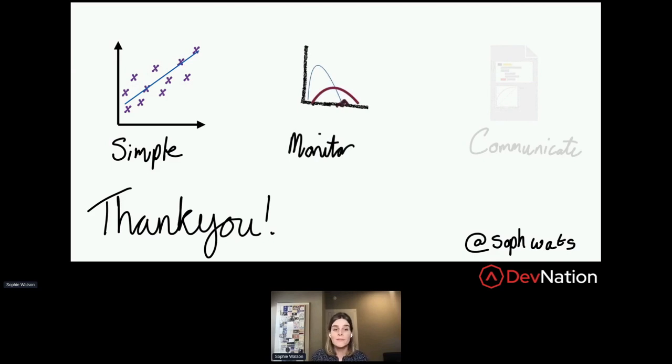Secondly, we need to monitor our data science and machine learning systems. Whenever you can, monitor data coming in, monitor predictions coming out, monitor everything that is possible to monitor so that we're more likely to catch those invisible errors as they arise.